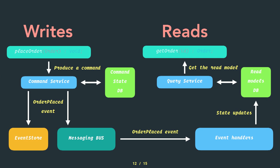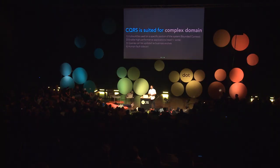That's the write part. On the other side you have the read part: event handlers are listening to the 'order placed' events and doing updates to the read model database, which is connected to the query service. Then in your front end you call your API — for example, 'get order' — which reads from the query service to the read model database.